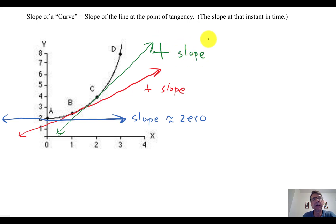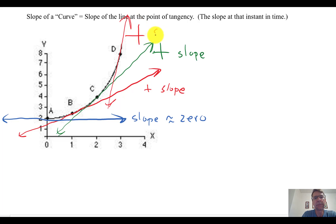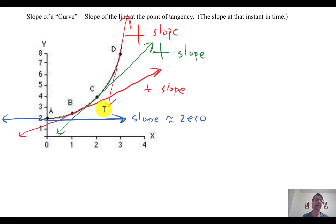A lot of times in future problems you're just comparing the magnitude of the slope. At point D, the tangent line is almost vertical — it has a very large positive slope. The slope is getting steeper and steeper as the curve bends upward. The slope of a curve requires drawing tangents at each point, and that slope is associated with the curve only at that instant in time.